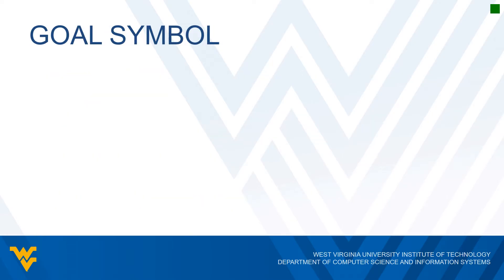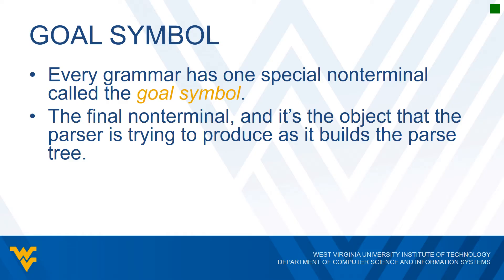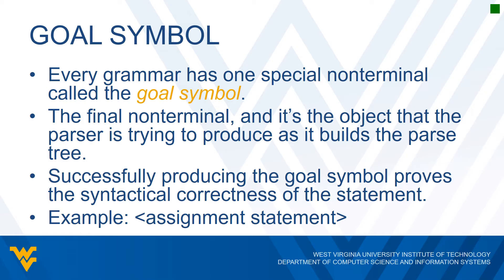In every grammar, there is one special non-terminal called the goal symbol. This is the final non-terminal, and it is the object that the parser is trying to produce as it builds the parse tree. When the parser has produced the goal symbol using all the elements of the statement, it has proved the syntactical correctness of that statement. In our assignment statement example, the goal symbol was simply 'assignment statement'. When this goal symbol has been produced, the parser has finished building the tree and the statement has been successfully parsed. The collection of all statements that can be successfully parsed is what we call the language defined by the grammar.